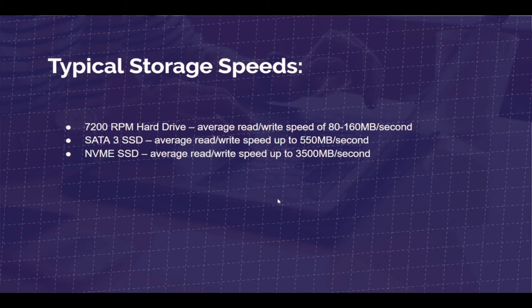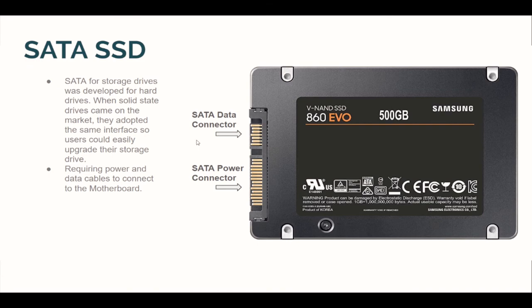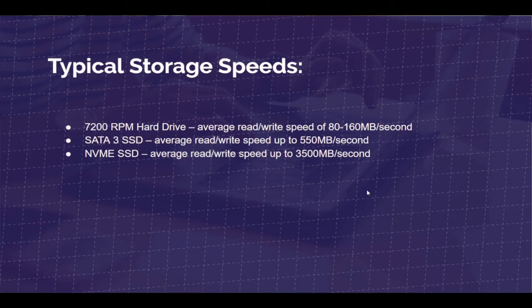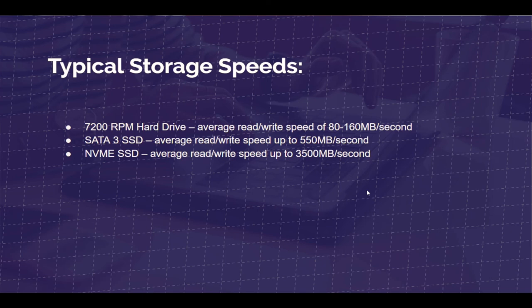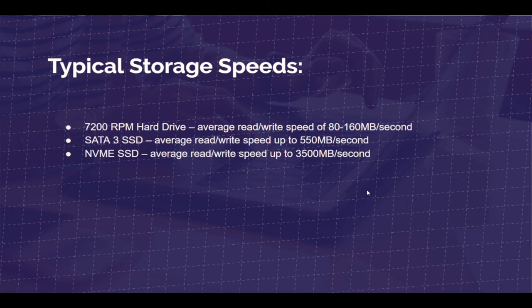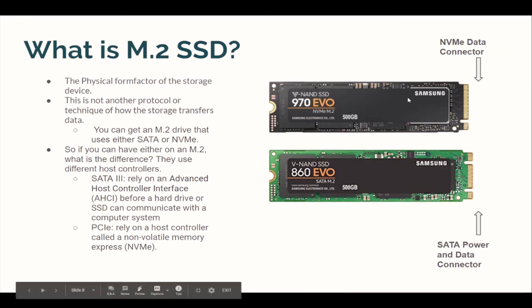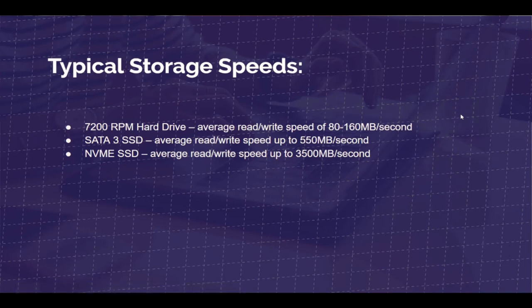Here are the typical storage speeds: the average read and write speed of a 7200 RPM hard drive is around 80 to 160 megabytes per second. A SATA 3 SSD reads and writes at around 550 megabytes per second. Whereas the NVMe SSD reads and writes at an average speed of 3,500 megabytes per second. The speeds are far faster as the technology has improved.